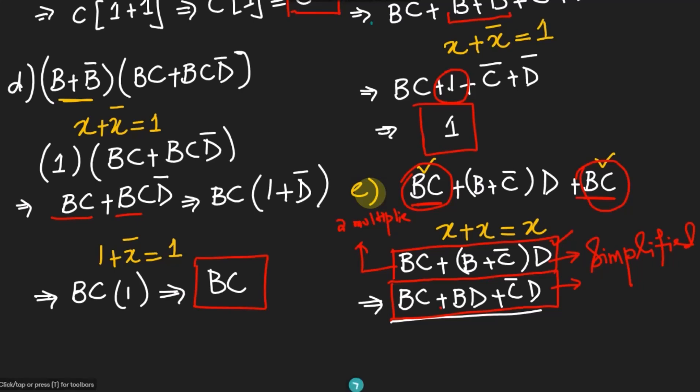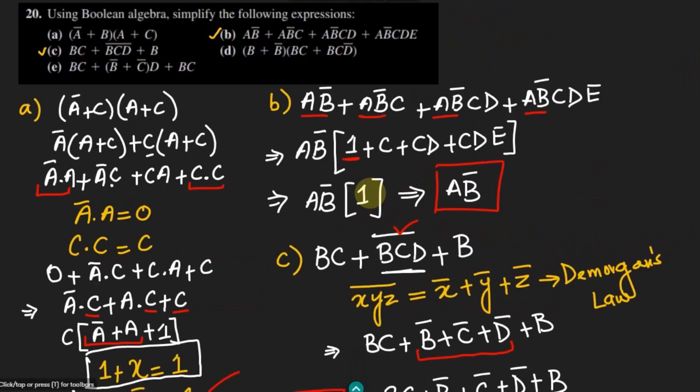That is it for today. We have seen the solution of problem 20, where we used Boolean algebra to simplify all the sub-parts of the question. I hope you understood it, and if you have any difficulty please ask in the comment box. We will see you with more questions in our upcoming video.